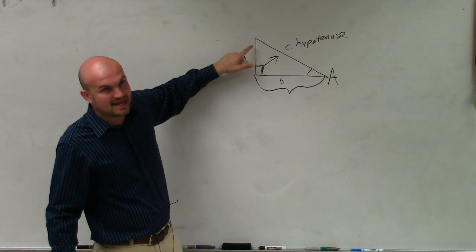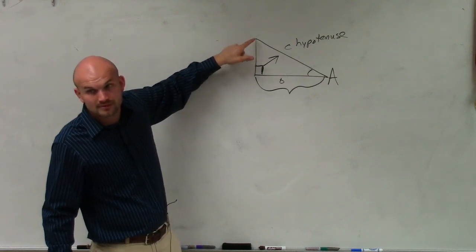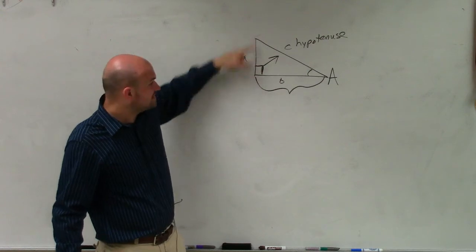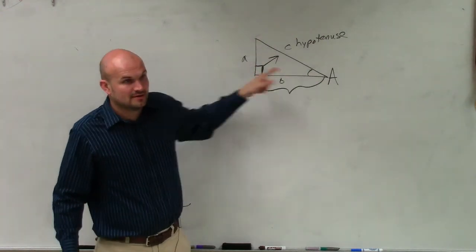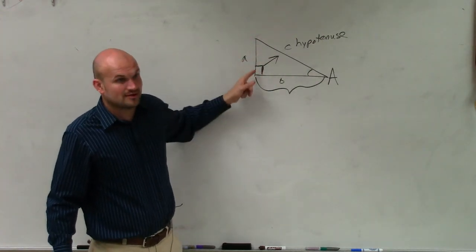This side connects to the right angle, but it does not connect to angle A. This side does not connect to angle A. It's on the opposite side of the triangle, the opposite side of the triangle.